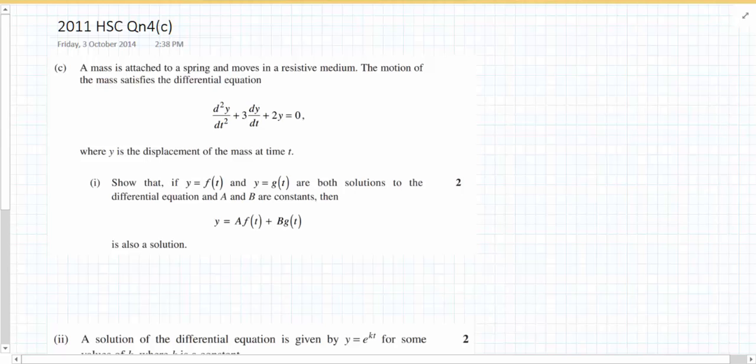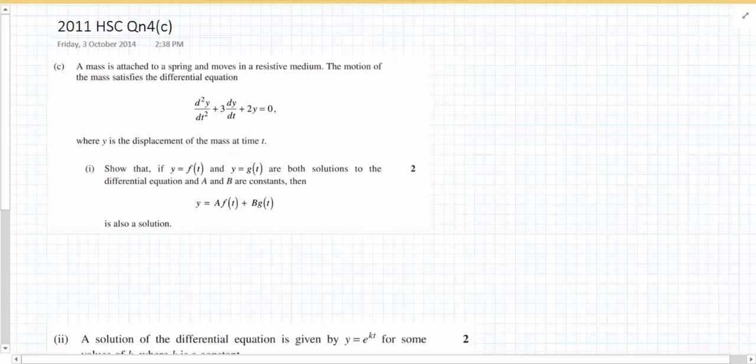So it says y is the displacement at time t. Now they've told us y equals f(t) and y equals g(t) are both solutions, and then I need to show that a combination of those two is also a solution. Well to make sense of things I'm going to start by substituting these two functions in there because I know these two functions, f(t) and g(t), satisfy the equation. So that's going to be my starting point.